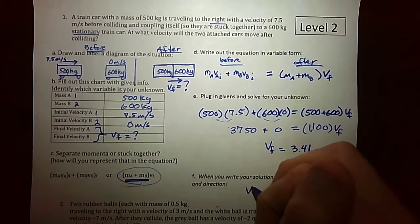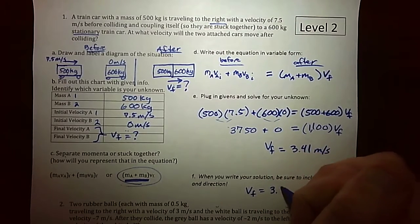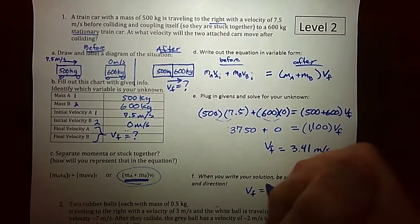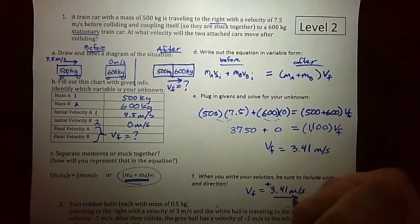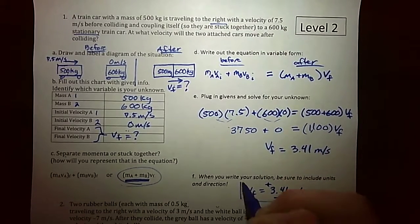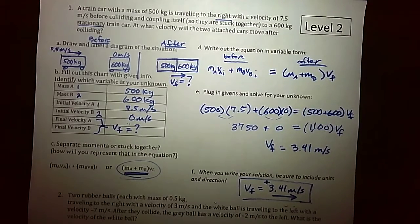So for that final answer, I'm going to say that my final velocity is equal to 3.41 meters per second. I can either put a positive here or I can draw an arrow going to the right. Either one works. You don't have to do both. And that's my final answer. Alright. Thanks for watching.